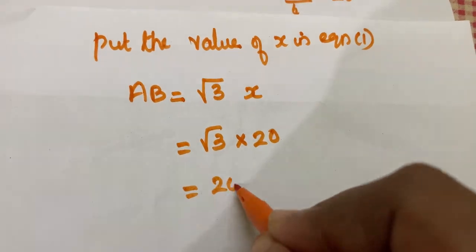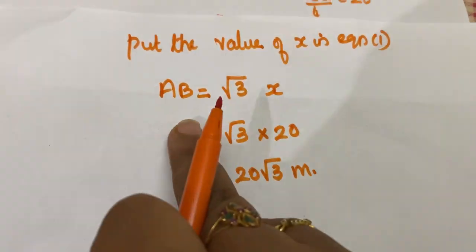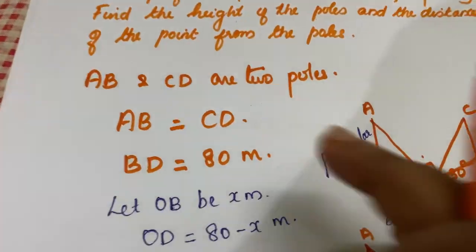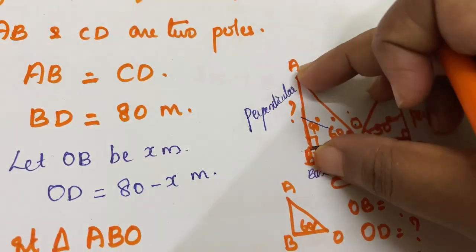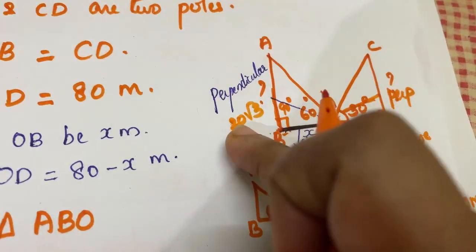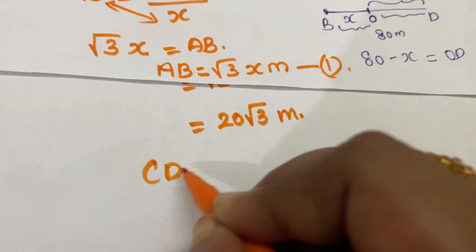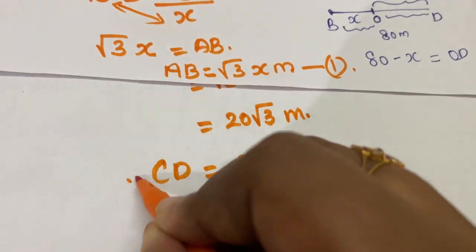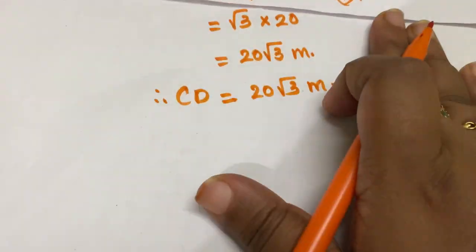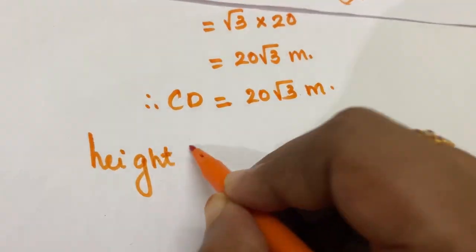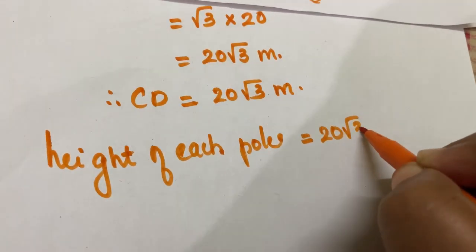AB equals 20 root 3 meters. Since AB equals CD, the height of each pole equals 20 root 3 meters.